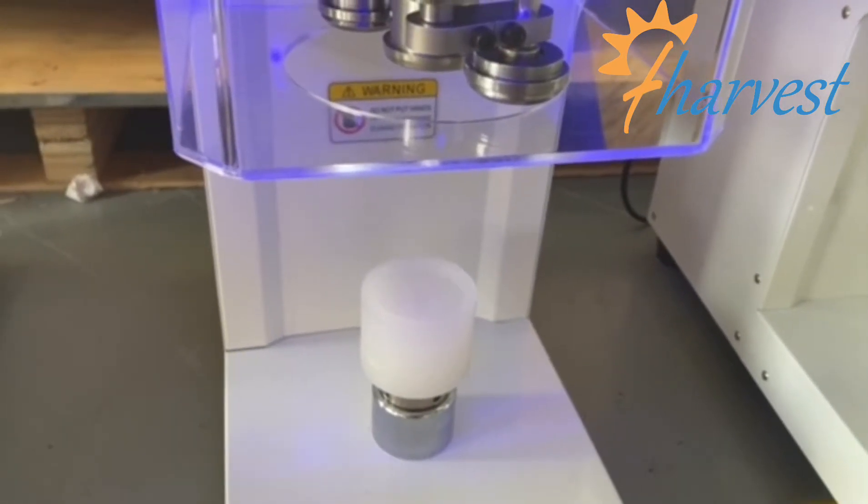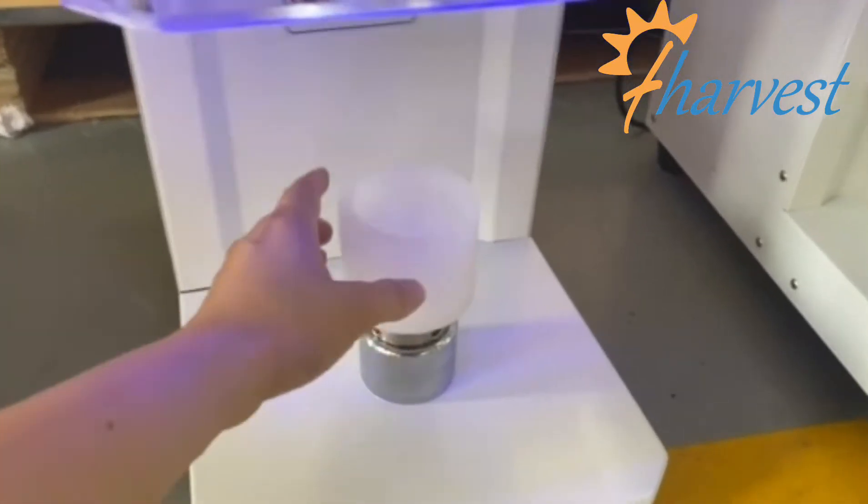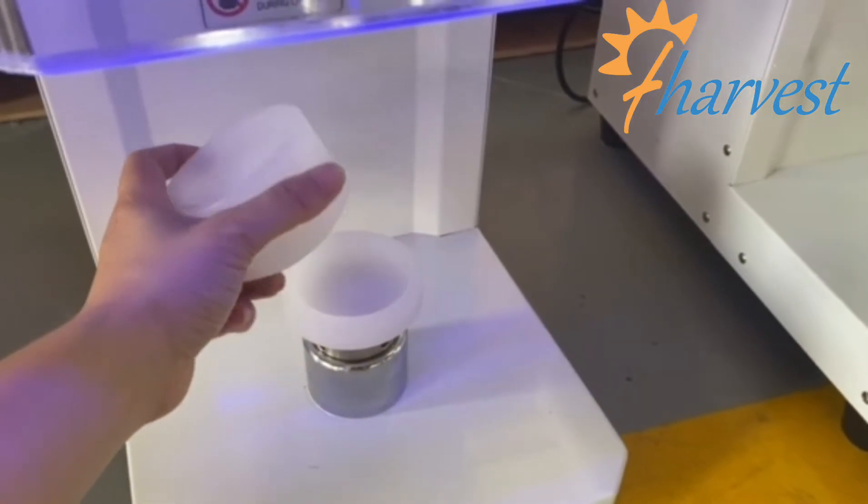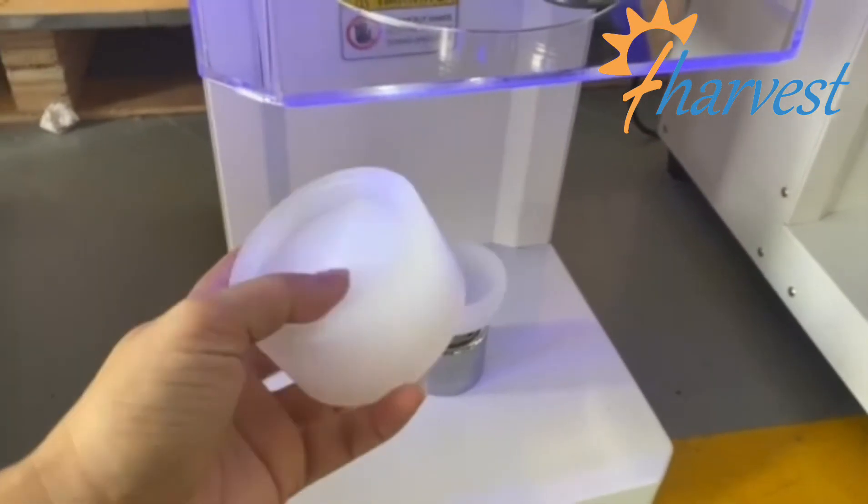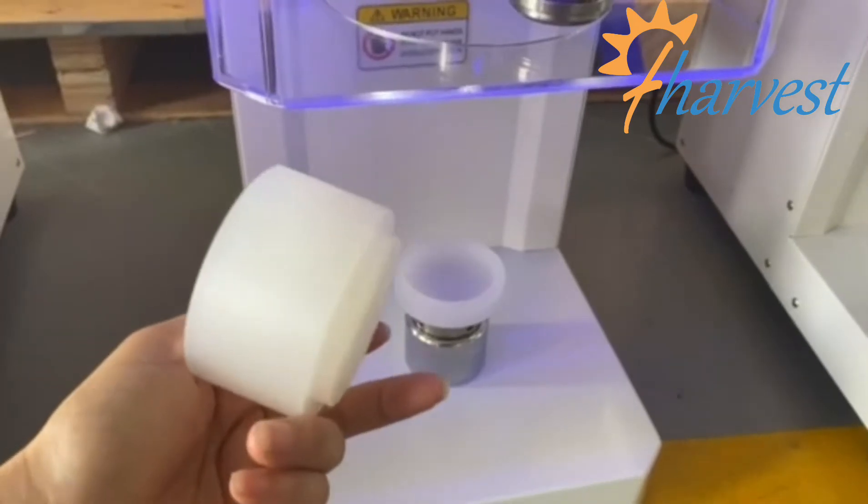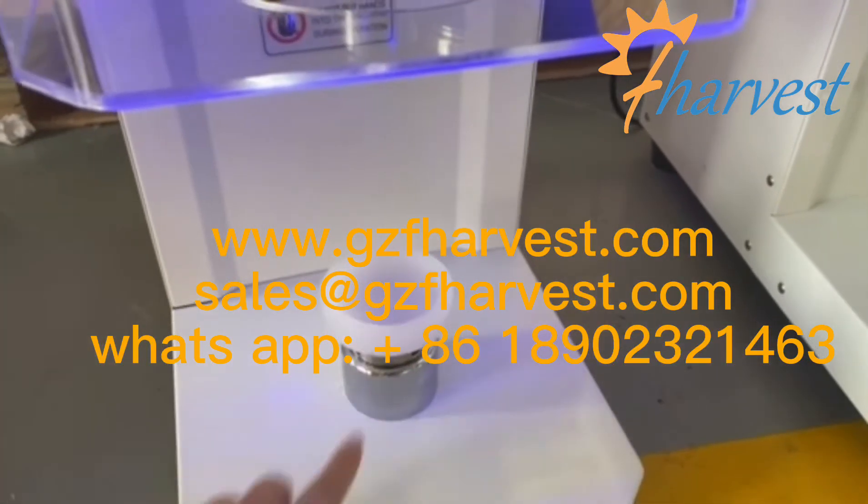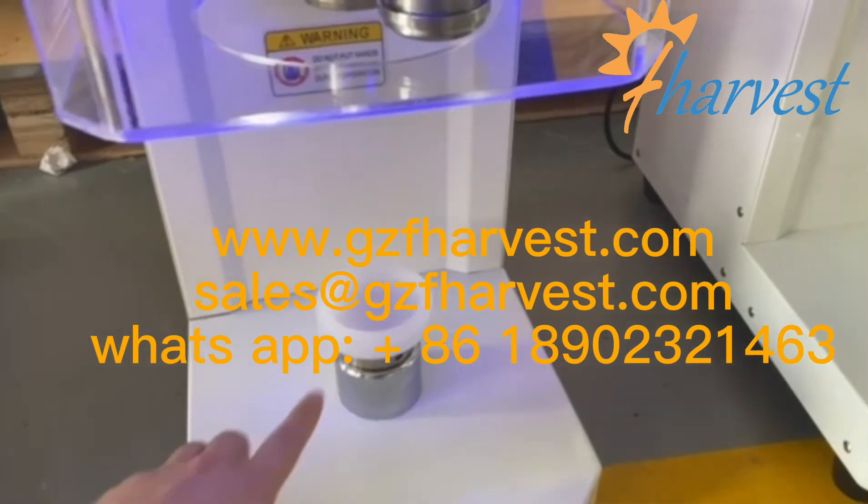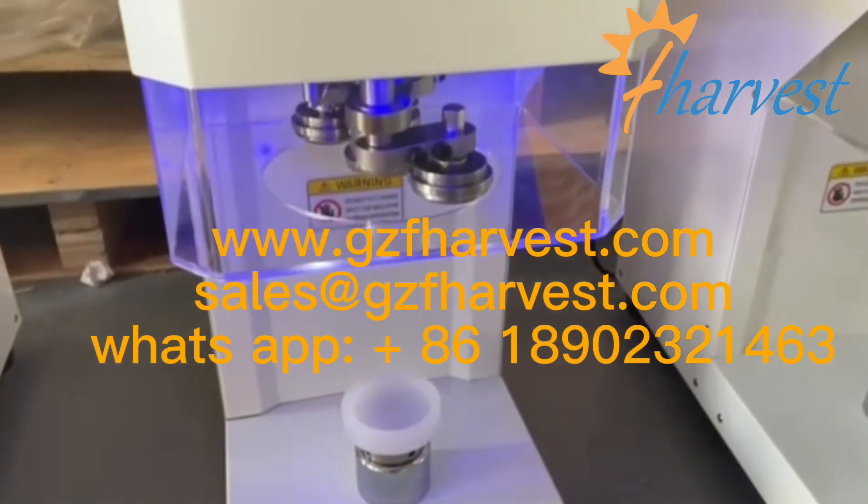If you want to change to 500 ml, you just need to pick out this base plate and put a 500 ml can on the base plate to steam. That's okay.